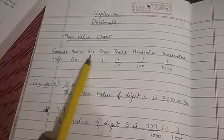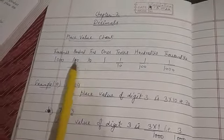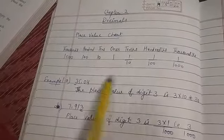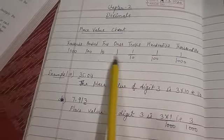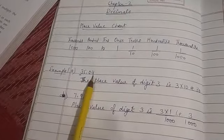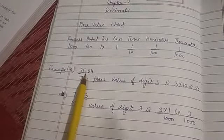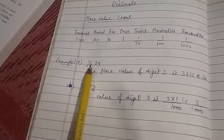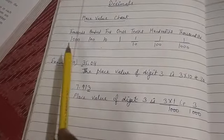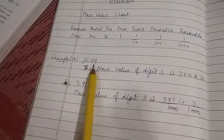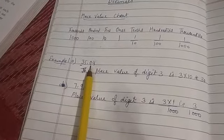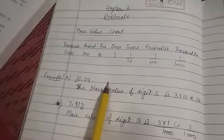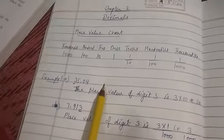See this place value chart. For place value related to each question you must remember this chart. See this example. 35.04 is given. What is our decimal part? How do we count it? This is one. This is one's place. This is a tenth place. Hundred and thousand. How do we count the decimal part? This is a tenth place. Hundredth place. Next one is a thousand place.